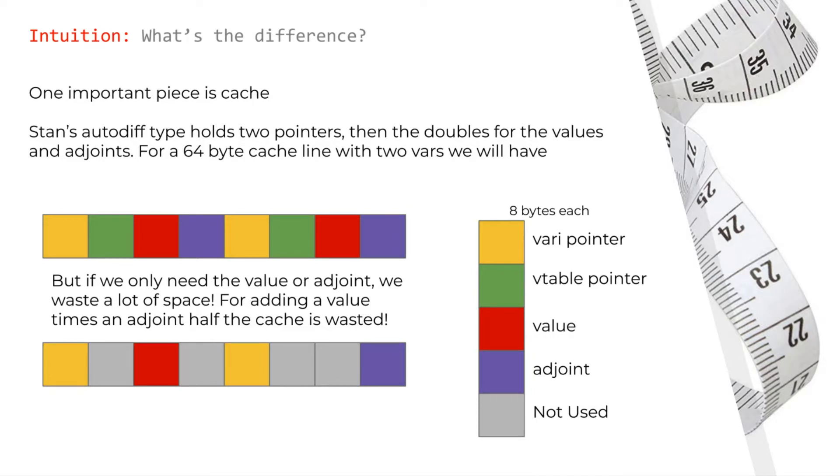This structure is very good for scalar math, where we will need all of these elements close by. But when we do matrix algebra, we will frequently only access the values and adjoints of each var. The second cache line here shows that for adding the value of one var and the adjoint of another, we end up wasting a lot of cache.